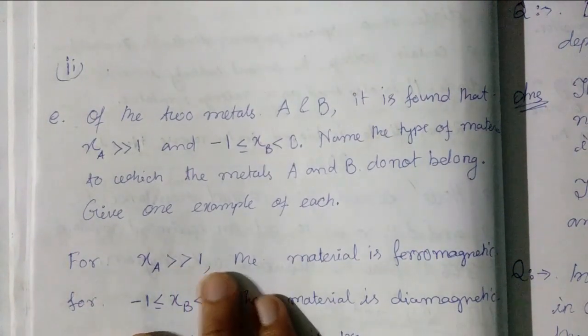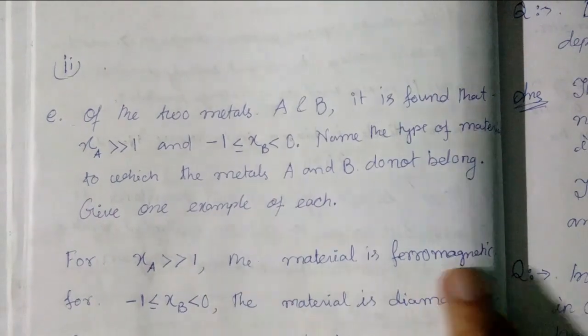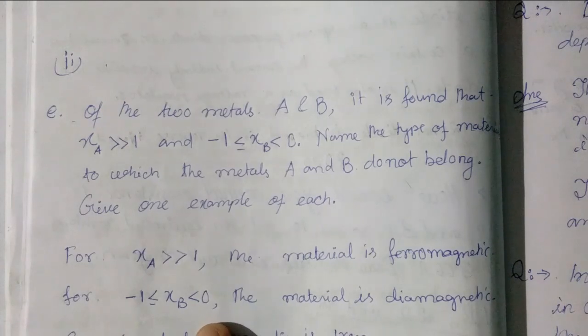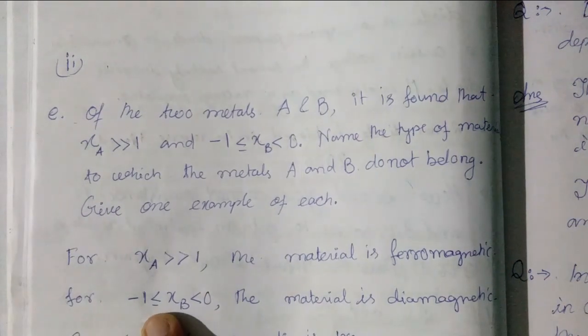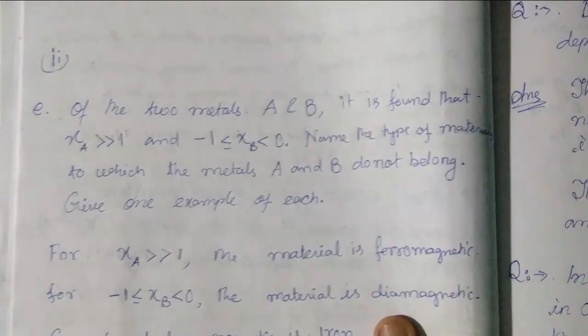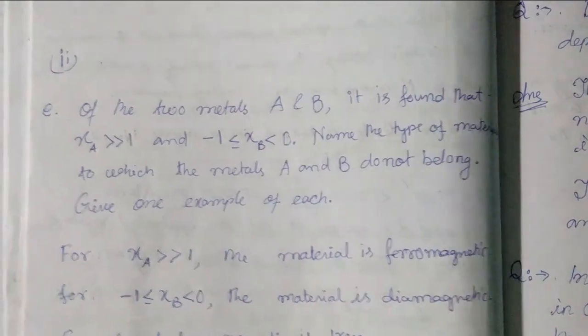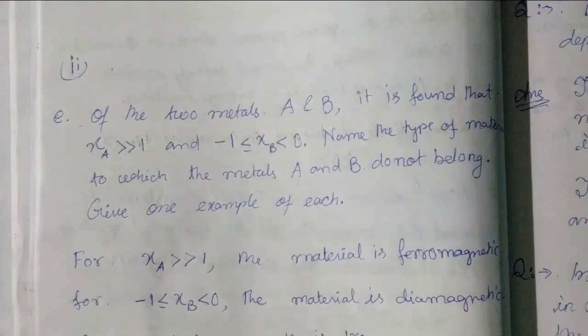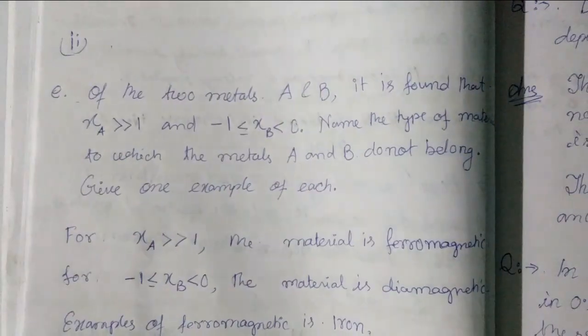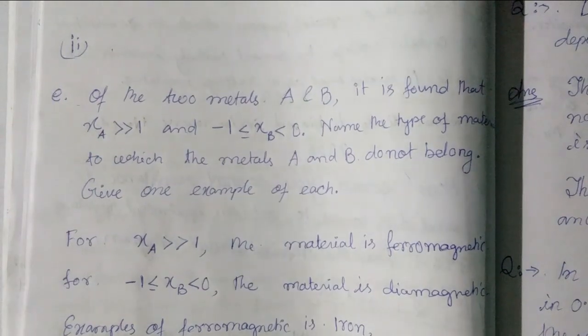For susceptibility greater than 1 the material is ferromagnetic and for susceptibility that is less than 0 and greater than minus 1, the material is diamagnetic. Example of ferromagnetic is iron and example of diamagnetic is gold.